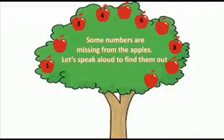This is an apple tree and the numbers from 1 to 10 are written on these given apples. But some numbers are missing from the apples. Let's speak aloud to find them out. 1, 2, 3, 4, very good, 5, 6, 7, 8, 9 and then 10, very good.